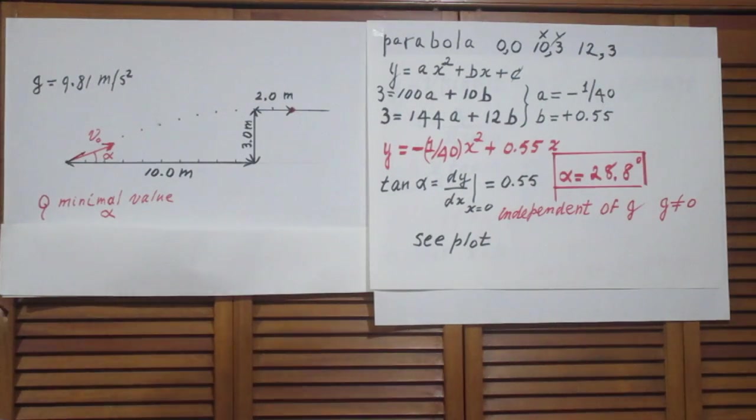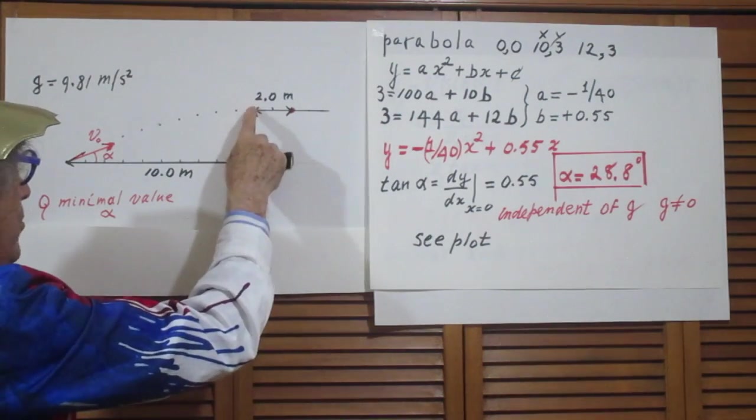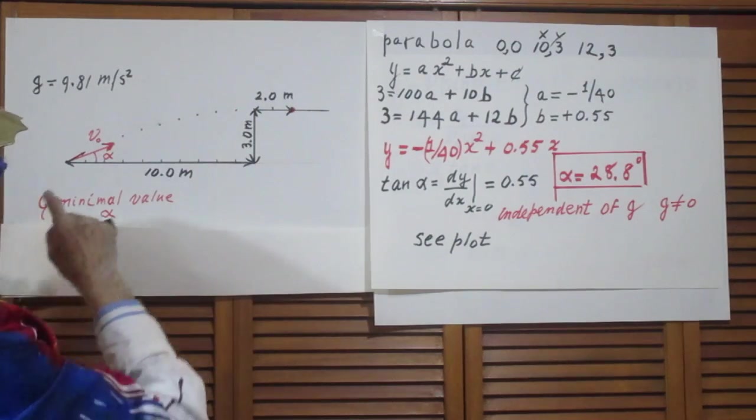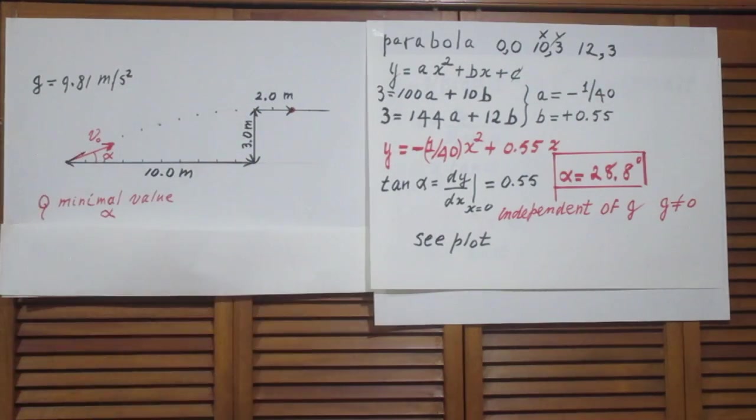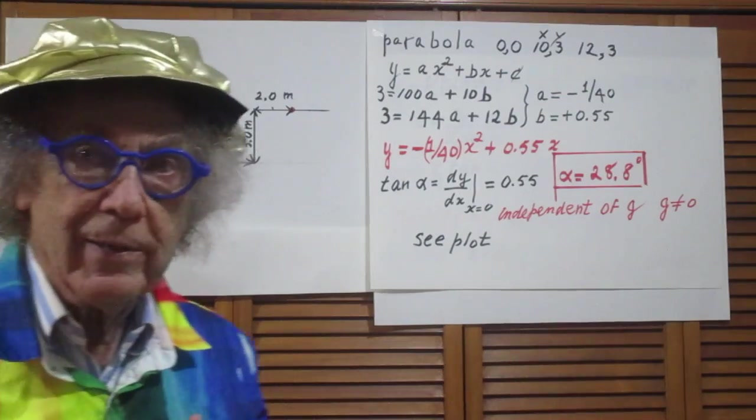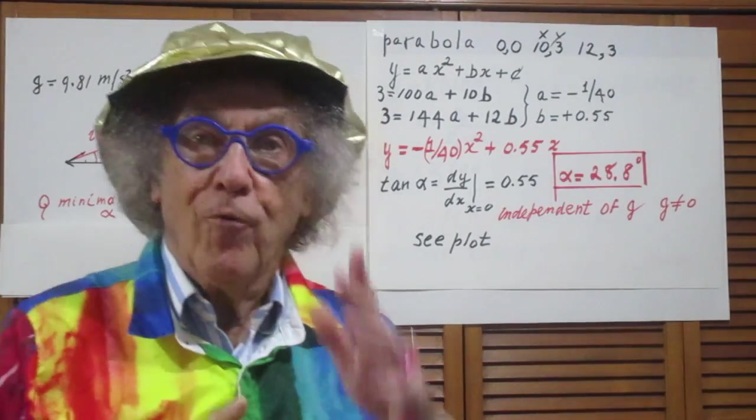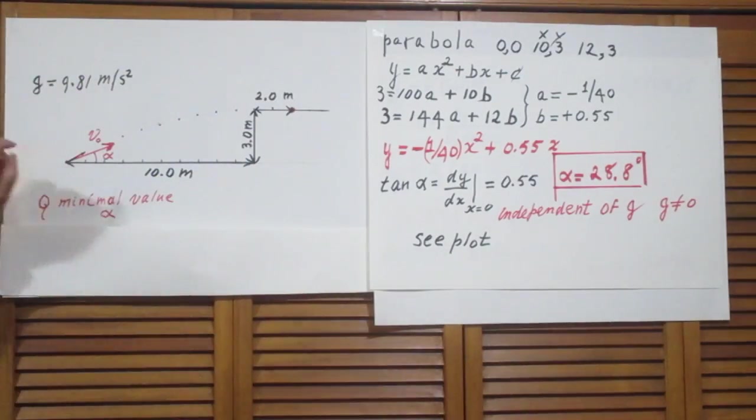Now the problem is that you have to clear this point here. If you shoot too low, it will hit this wall. So the parabola for which alpha would be the smallest value...